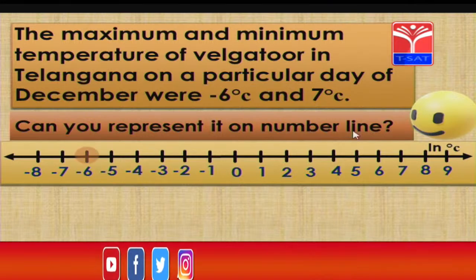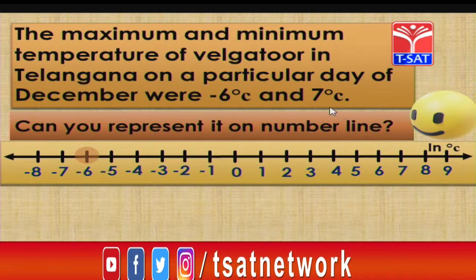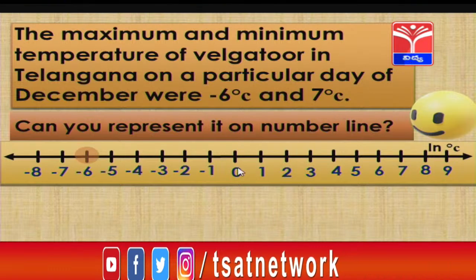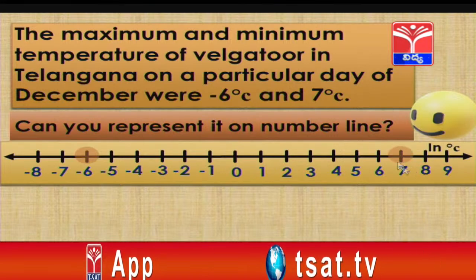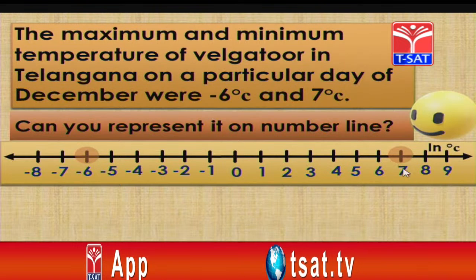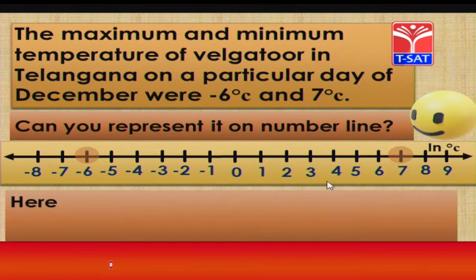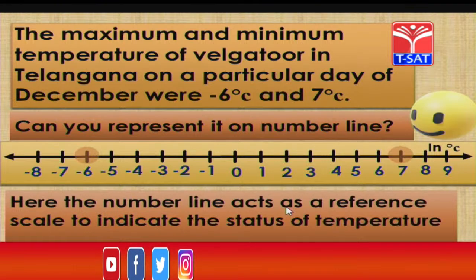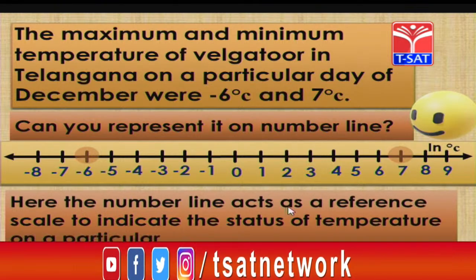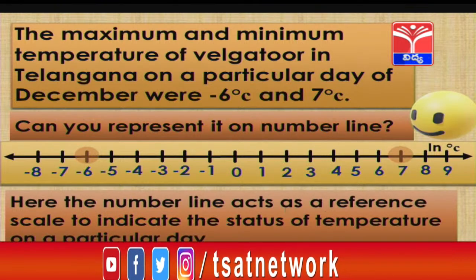Now identify 7 degrees on the number line. It lies at a distance of 7 units to the right side of 0, so here it is 7 degrees temperature at the right side of 0 at a distance of 7 units. The number line acts as a reference scale to indicate the status of temperature on a particular day.